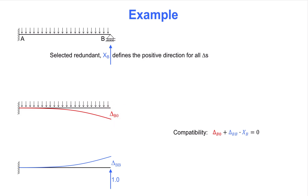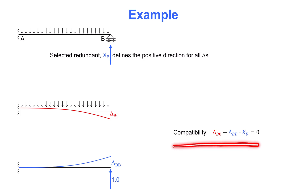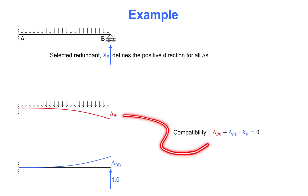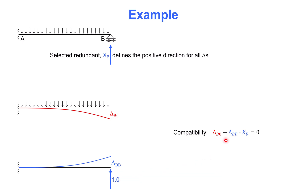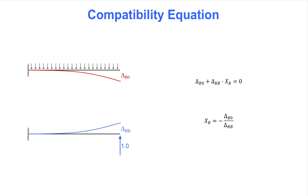It is important to note that the gap delta_B0 cannot occur in the original structure. That is why we consider another beam case: the statically determinate structure with a unit load acting along the direction of the redundant force. This tells us what force is required to close the gap. This is expressed by a compatibility equation: the gap opened due to the external load must be counteracted by the redundant force. The second term is delta_BB times the redundant, where delta_BB is the displacement due to a unit force. We then solve the compatibility equation, yielding the redundant as minus delta_B0 over delta_BB.